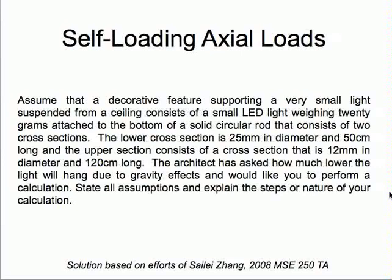This is an example to look at the displacements or strains that take place in axial structures due to gravity, both from hanging under their own weight as well as from things hanging from them. We're going to assume there's a decorative feature supporting a very small light suspended from a ceiling, consisting of a small LED light weighing 20 grams attached to the bottom of a solid circular rod that consists of two cross-sections.